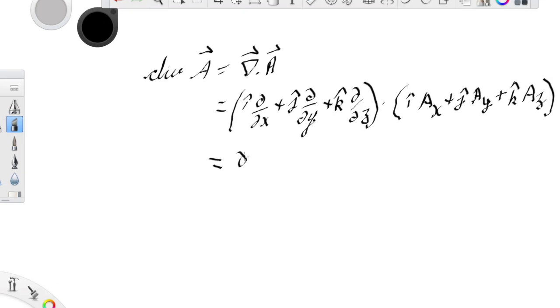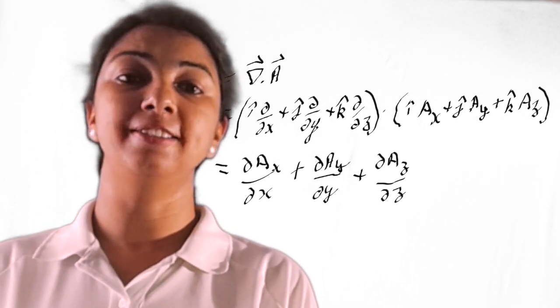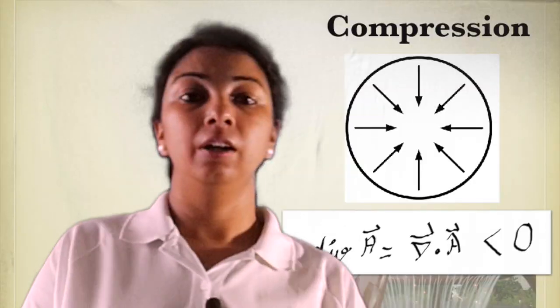After doing scalar product, that is i dot i, j dot j, k dot k equals one, we get the scalar value: partial Ax upon partial x, plus partial Ay upon partial y, plus partial Az upon partial z. Operation of divergence on a vector field results into a scalar field, that is scalar quantity.